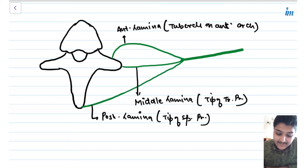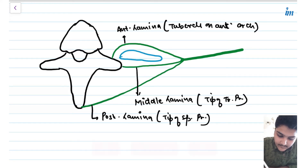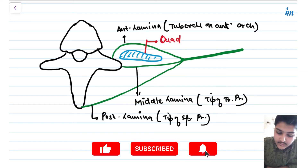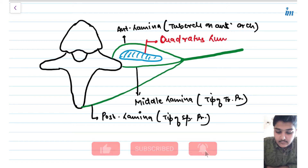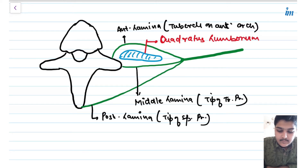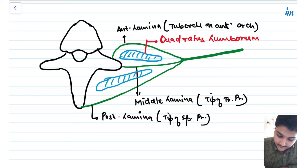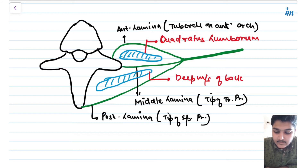In between the anterior and middle lamina we have a muscle known as quadratus lumborum. In between the middle and posterior lamina we have the deep muscles of the back — for example, we have erector spinae, we have multifidus, and so on.